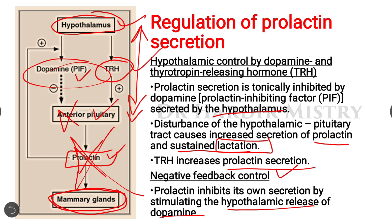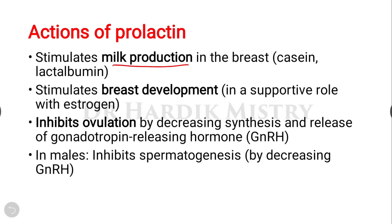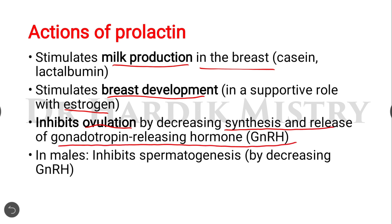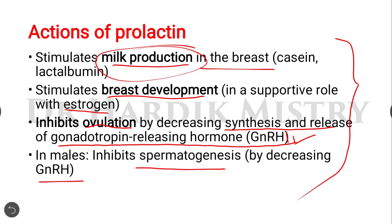Actions of prolactin: it stimulates milk production — lactogenesis — in the mammary gland. It also stimulates breast development in a supportive role with estrogen. It inhibits ovulation by decreasing the synthesis and release of gonadotropin releasing hormone (GnRH) — that is why a lactating woman does not go through the menstrual cycle. In males, it inhibits spermatogenesis by decreasing GnRH.